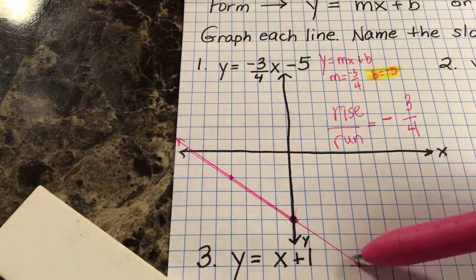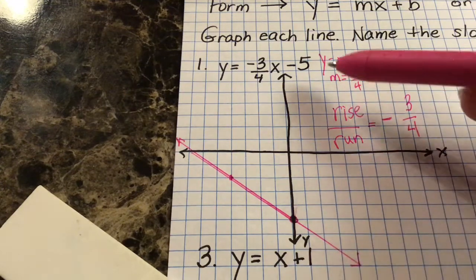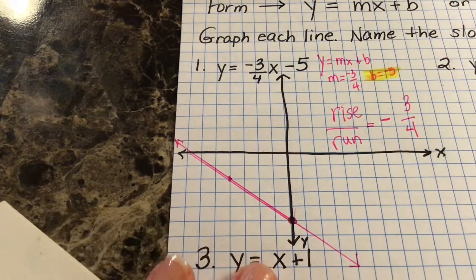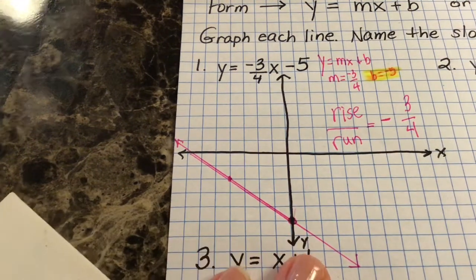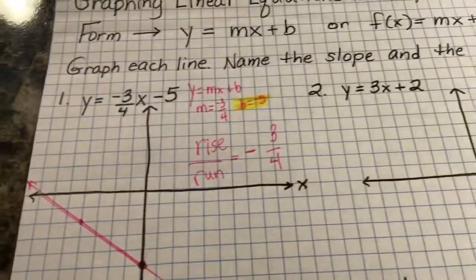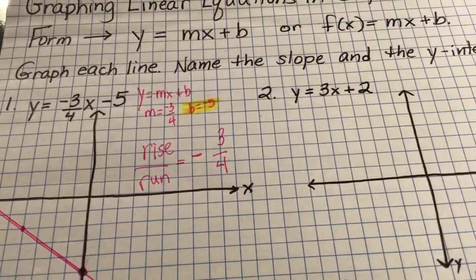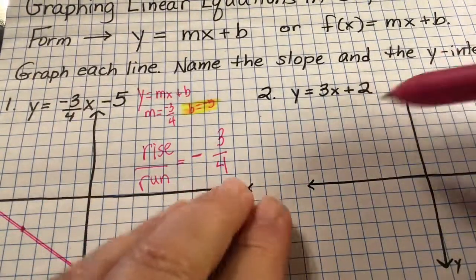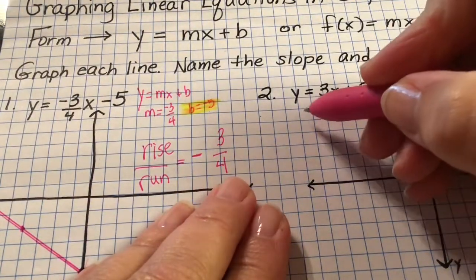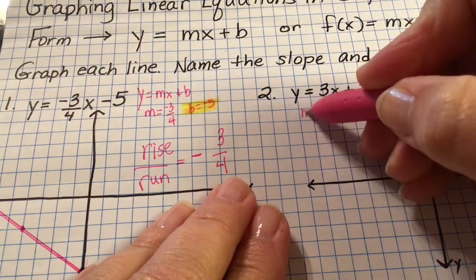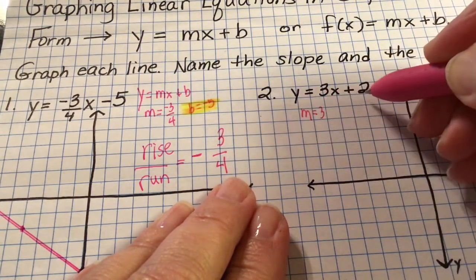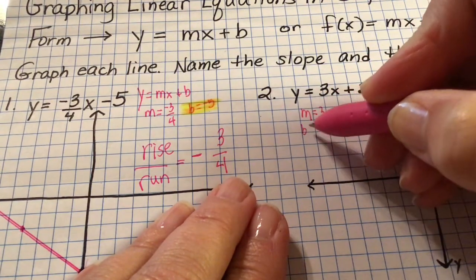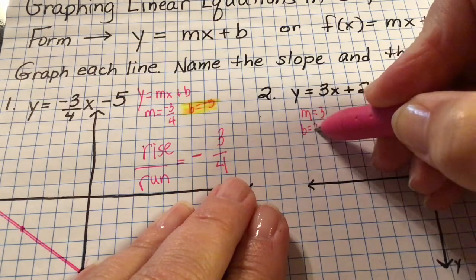So this is the equation of the line: y equals negative three-fourths x minus five. Let's move on to number two. For question two, my slope is three and my y-intercept is two.